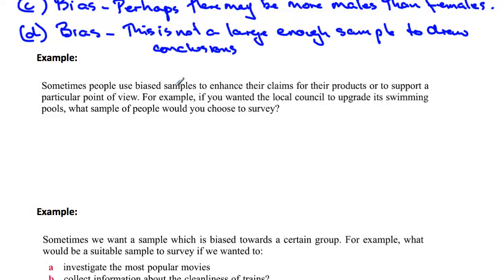Now let's look at this example. It says sometimes people use biased samples to enhance their claims for their product or to support a particular point of view. For example, if you wanted the local council to upgrade its swimming pool, what sample of people would you choose to survey? Clearly, the sample of people you would take would be people at the swimming pool.